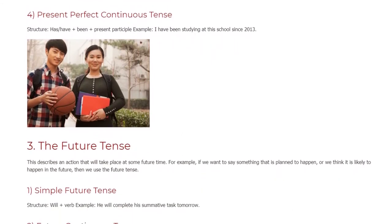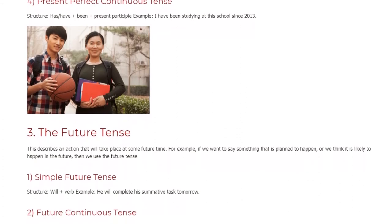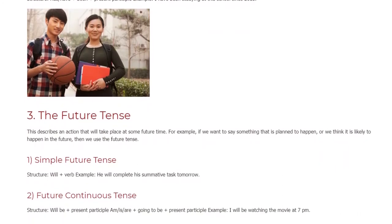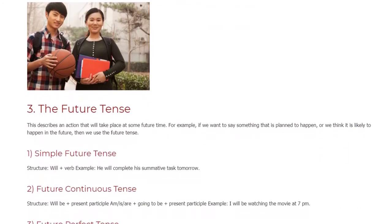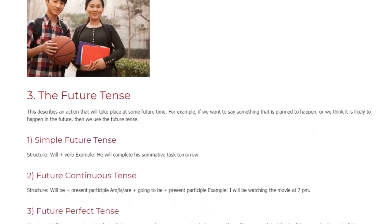4. Future Perfect Continuous Tense. Structure: Will have been plus Present Participle, Am/is/are plus going to have been plus Present Participle. Example: By next Sunday, I will have been studying grammar for two weeks.